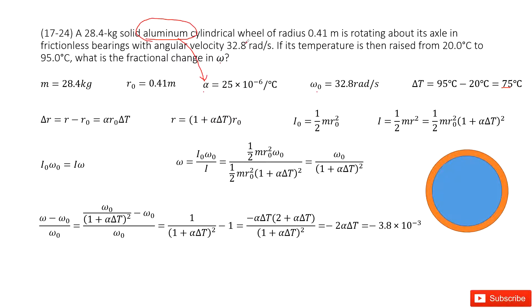And also, it tells us another keyword, cylindrical. So we can get the moment of inertia, one half mR squared. So now this is given quantities.